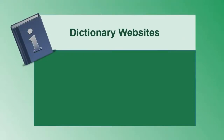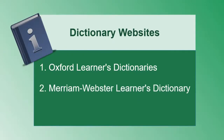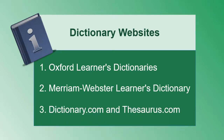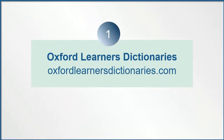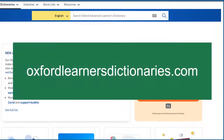This video will show you three dictionary websites and a thesaurus website. Number one, the Oxford Learners Dictionaries. Oxford Learners Dictionaries is an online dictionary with lots of features. Go to OxfordLearnersDictionaries.com. Make sure you spell it correctly.